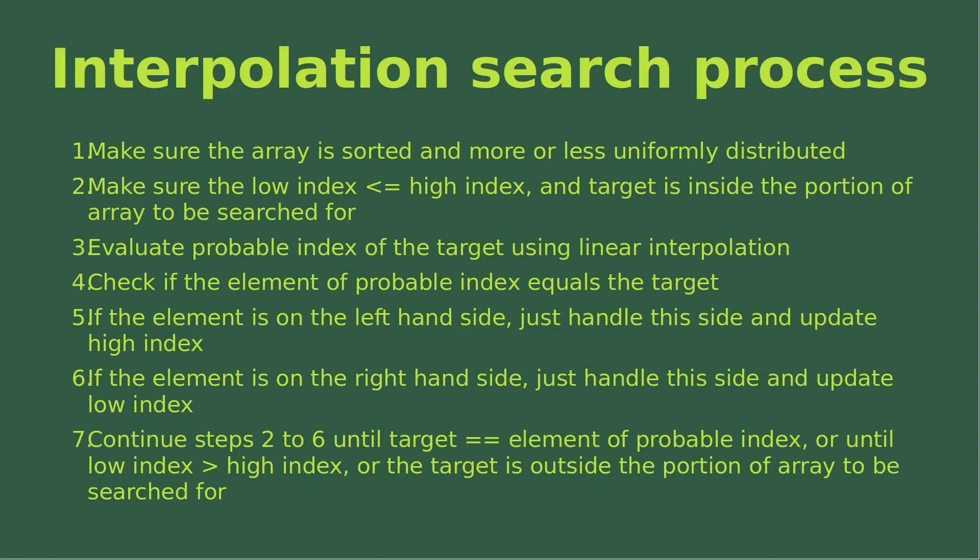Then we continue steps 2 to 6 until the target equals the element of the probable index — meaning the element can be found from the array — or until the low index is higher than the high index, or the target is really outside the portion of the array to be searched for. In these cases, we say that the target cannot be found from the array using the interpolation search process.